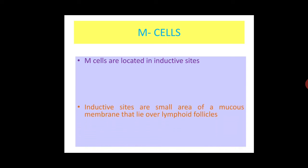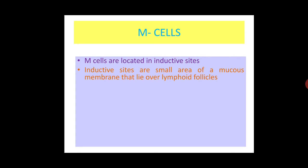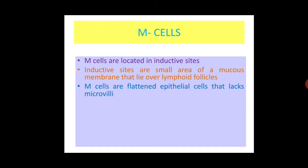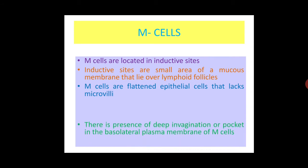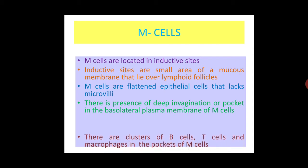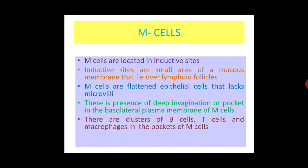M cells are located in the inductive sites, which are small areas of the mucous membrane that lie over lymphoid follicles. These are flattened epithelial cells that lack microvilli. There is a deep invagination or pocket in the basolateral plasma membrane of M cells, which contains clusters of B cells, T cells and macrophages.